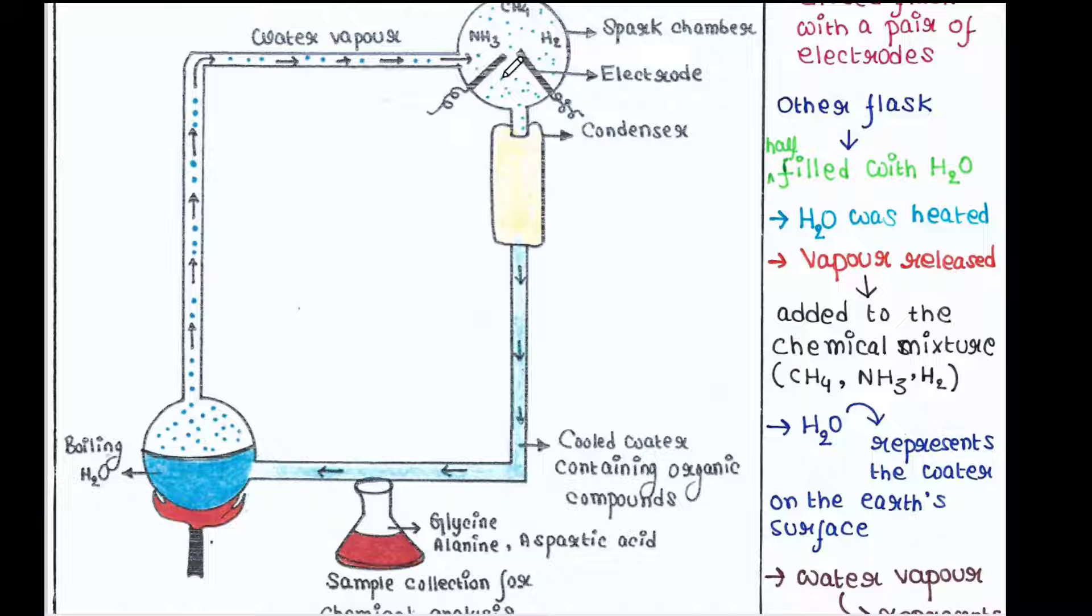And the water was heated and the vapor released was added to the chemical mixture. That is, methane, hydrogen and ammonia mixture. The water in the flask represents the water on the earth's surface. And the hot water vapor is just like the water evaporating from primitive hot seas.